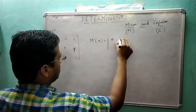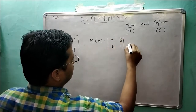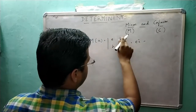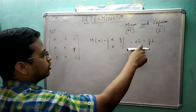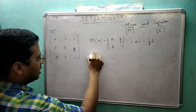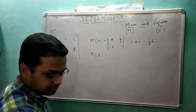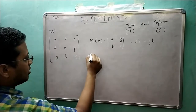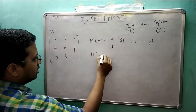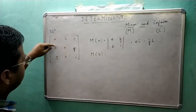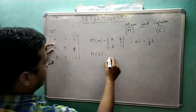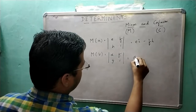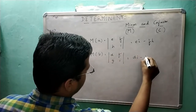So the minor of A equals the determinant of E, F, H, I — which is E×I minus F×H. Similarly, the minor of B is found by forgetting the column and row containing B, then finding the determinant of D, F, G, I — which equals D×I minus F×G.